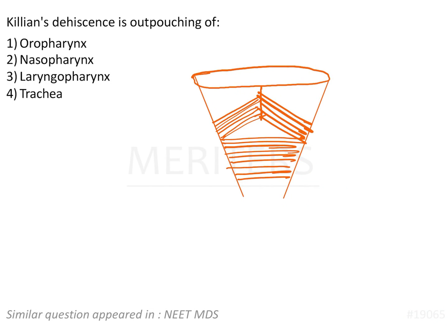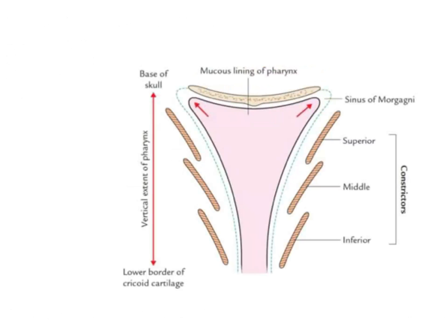The question here is: Killian's dehiscence is an outpouching of the oropharynx, nasopharynx, laryngopharynx, or trachea. We will be discussing about Killian's dehiscence. Before that, I will give you an overview of the various constrictors of the pharynx.